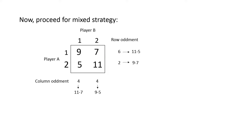Now let's see how to get the column oddment. In the same way, consider the second column for the first column oddment: 11 minus 7 gives 4. And consider the first column for the second column oddment: 9 minus 5 gives 4. So the column oddments are 4 and 4. The row oddment values are 6 and 2, and the column oddment values are 4 and 4.